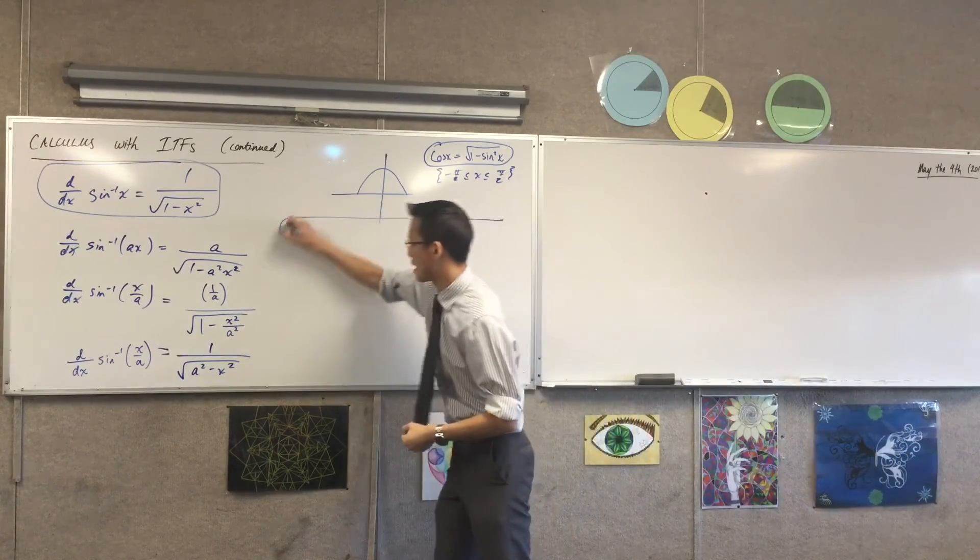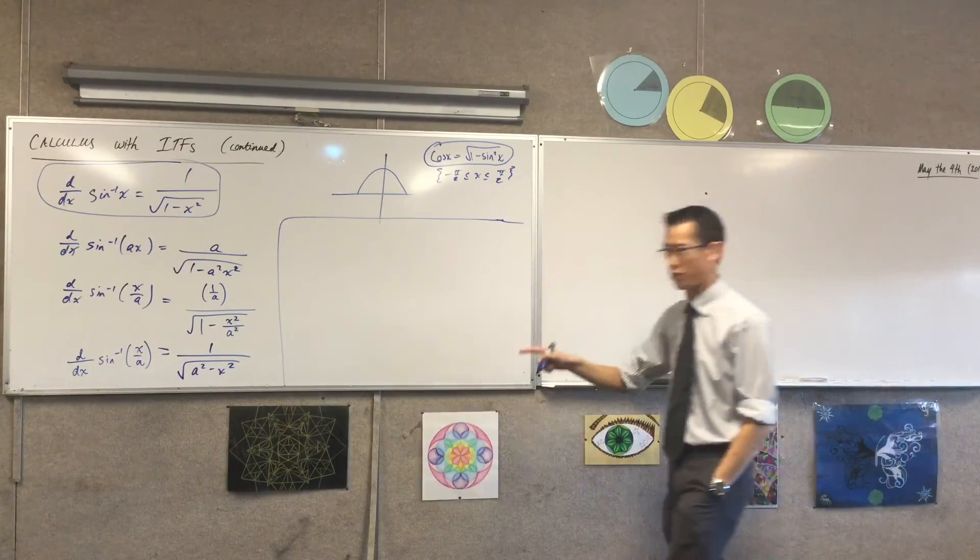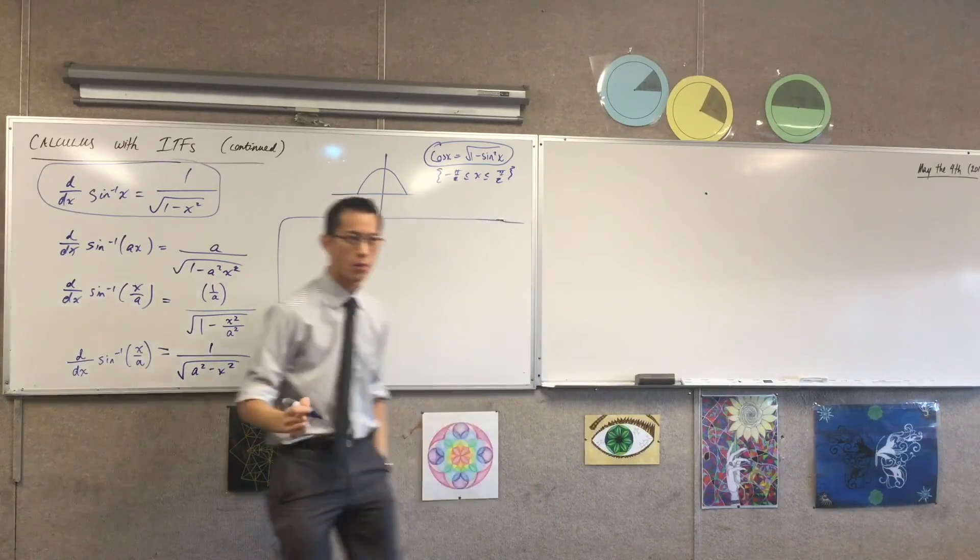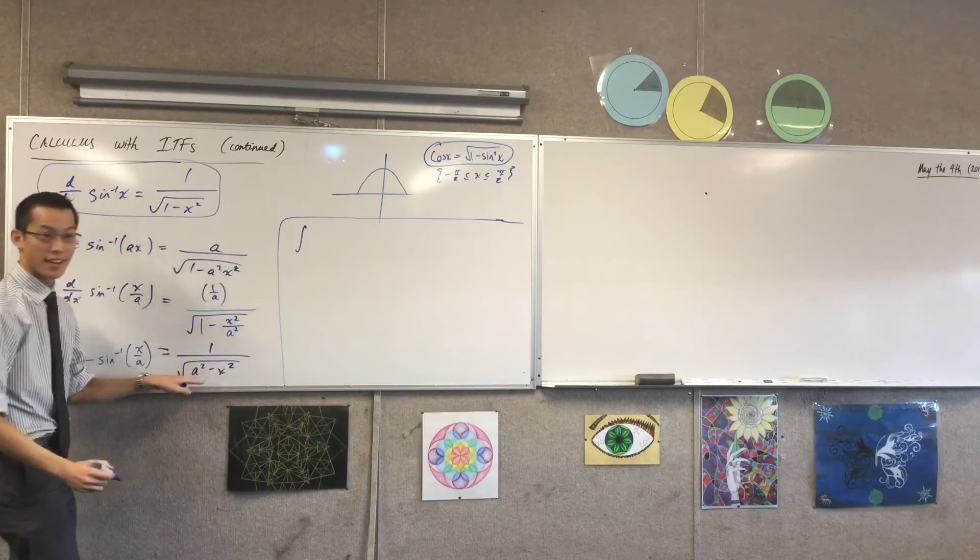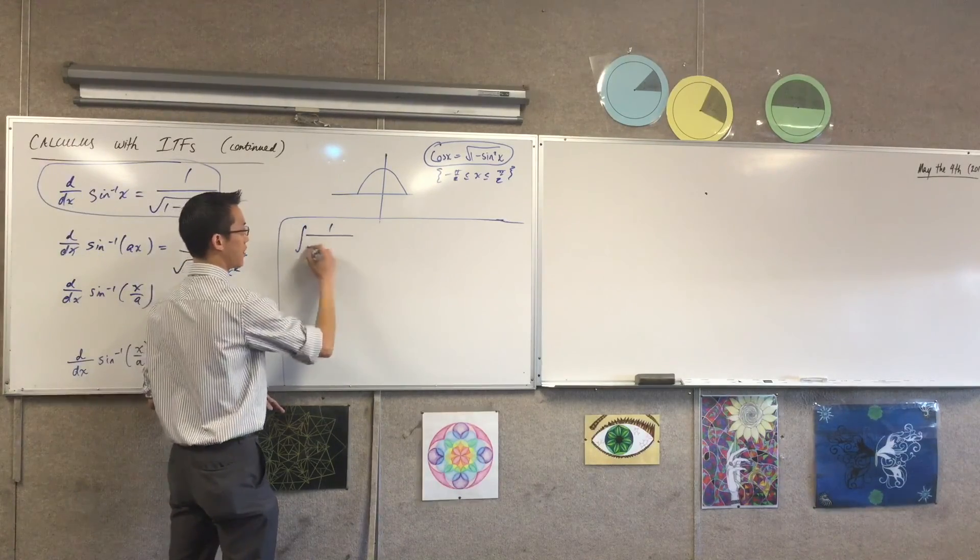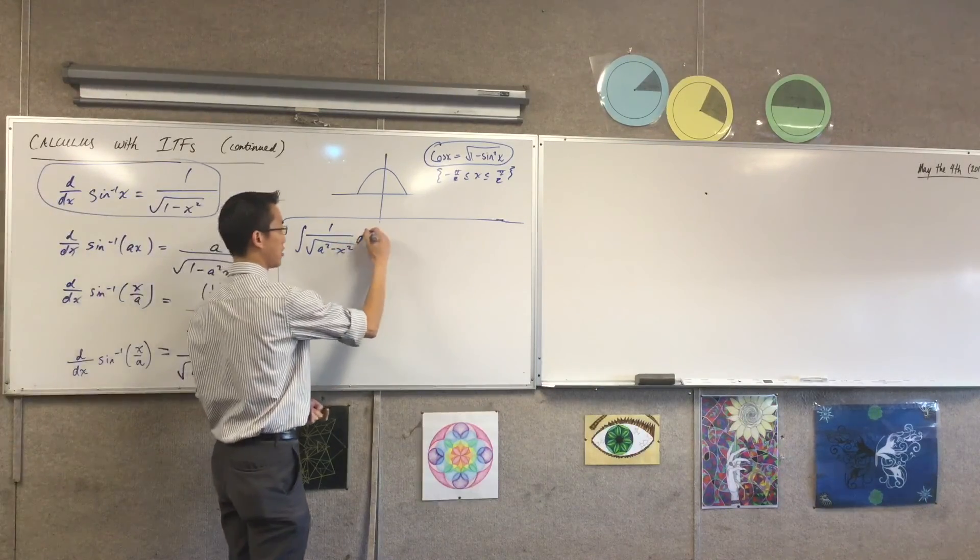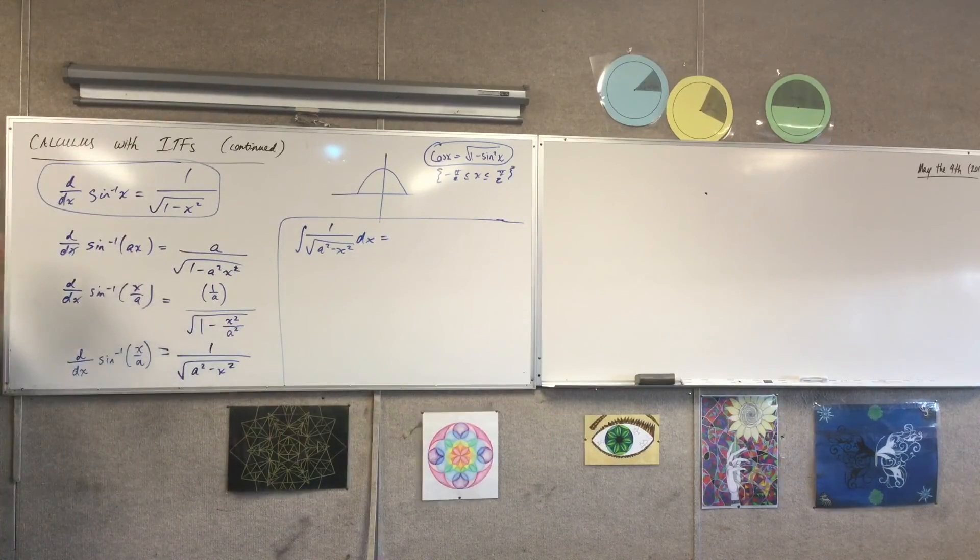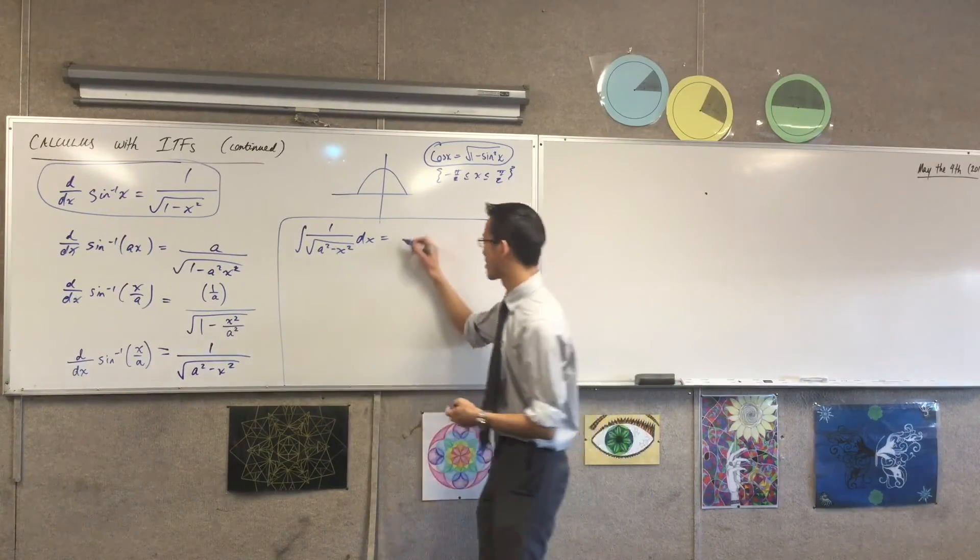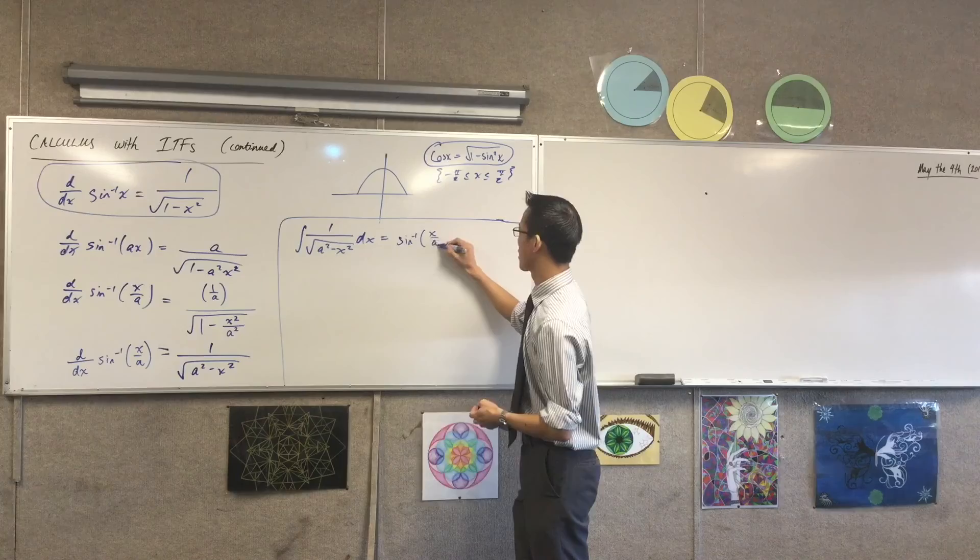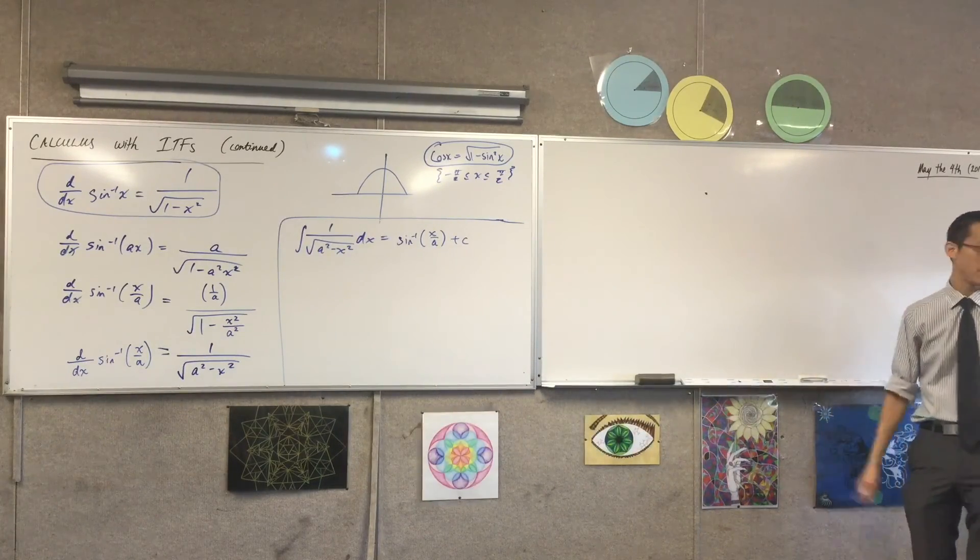So, right alongside here, what integration statement would I make out of this line? I can't just write it straight away. What would I write? Integral of... Yeah, it's going to be pretty good. Integral of... And I'm integrating with respect to x and I'm going to write dx then. Equals what? Sine inverse x on a plus my constant, very good. Okay, now this is what you see, this is the result that's on the reference sheet.